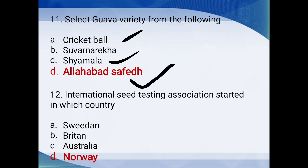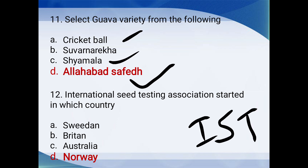International Seed Testing Association (ISTA) started in which country? Sweden, Britain, Australia, or Norway? The answer is Norway.